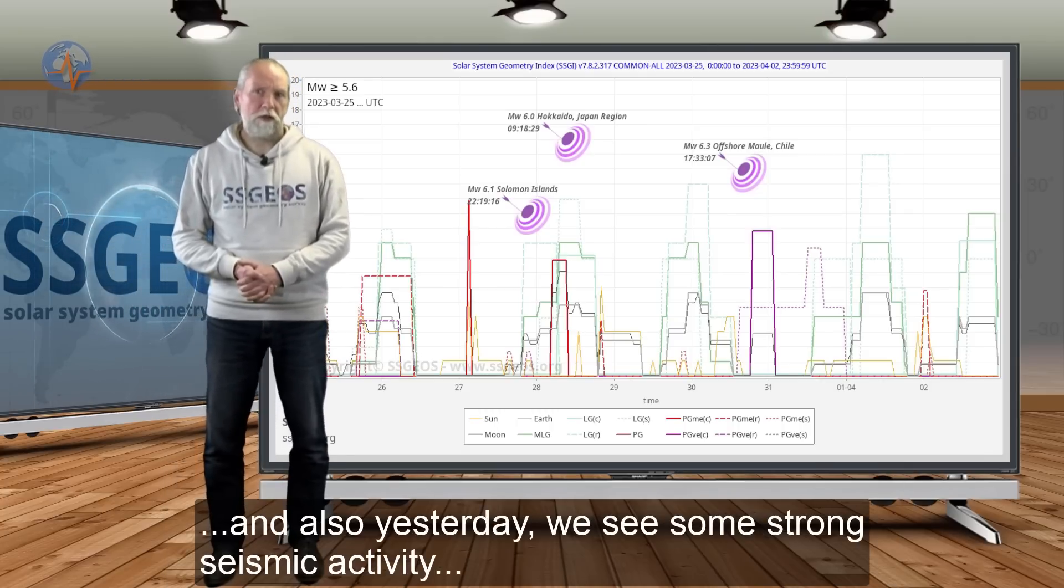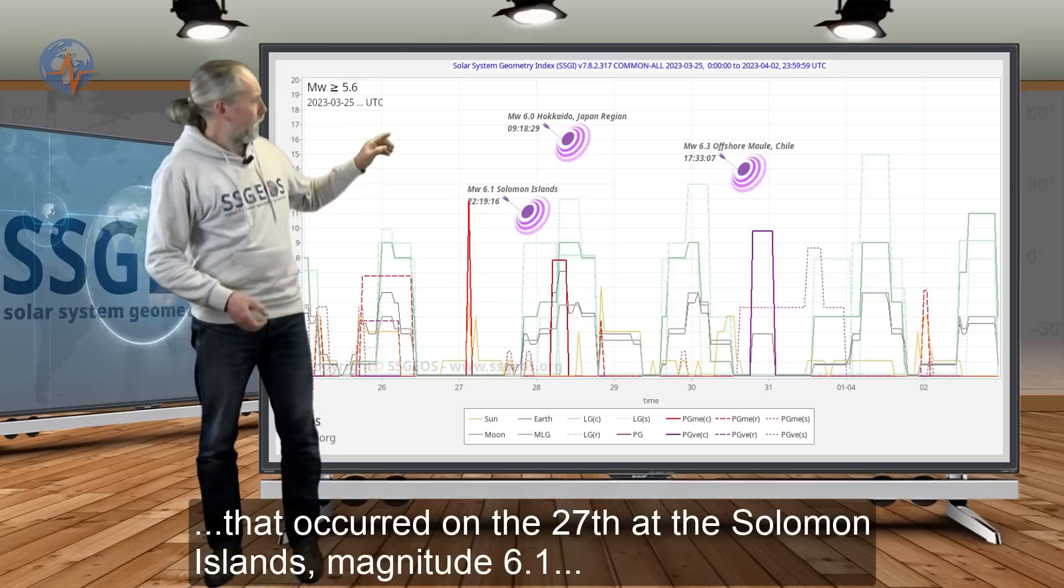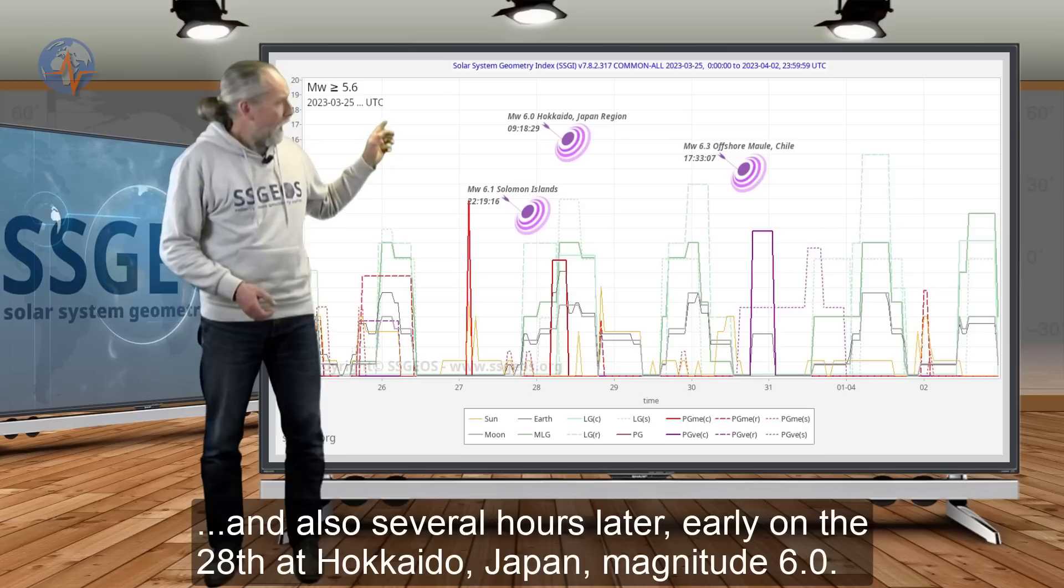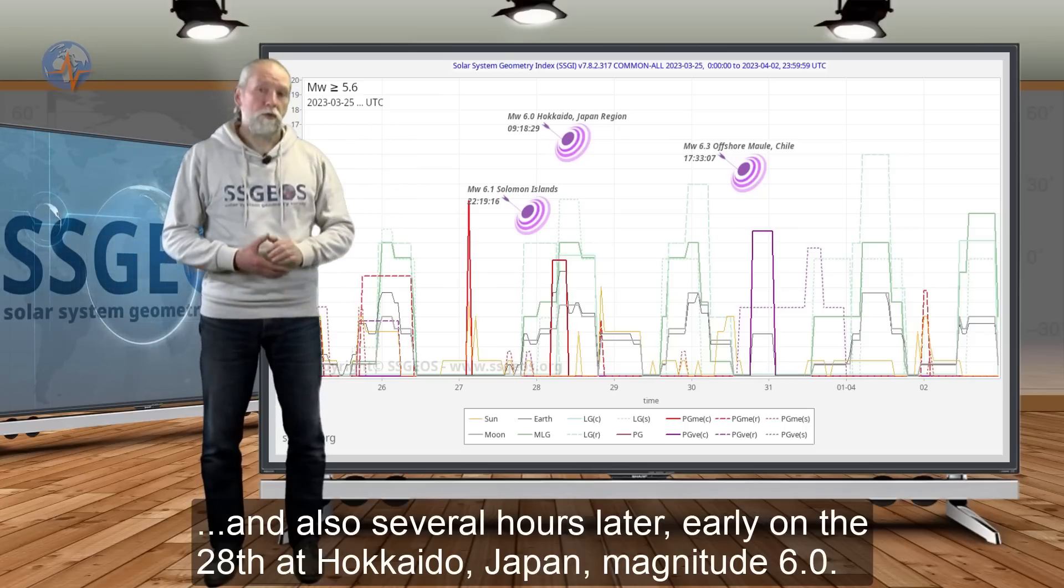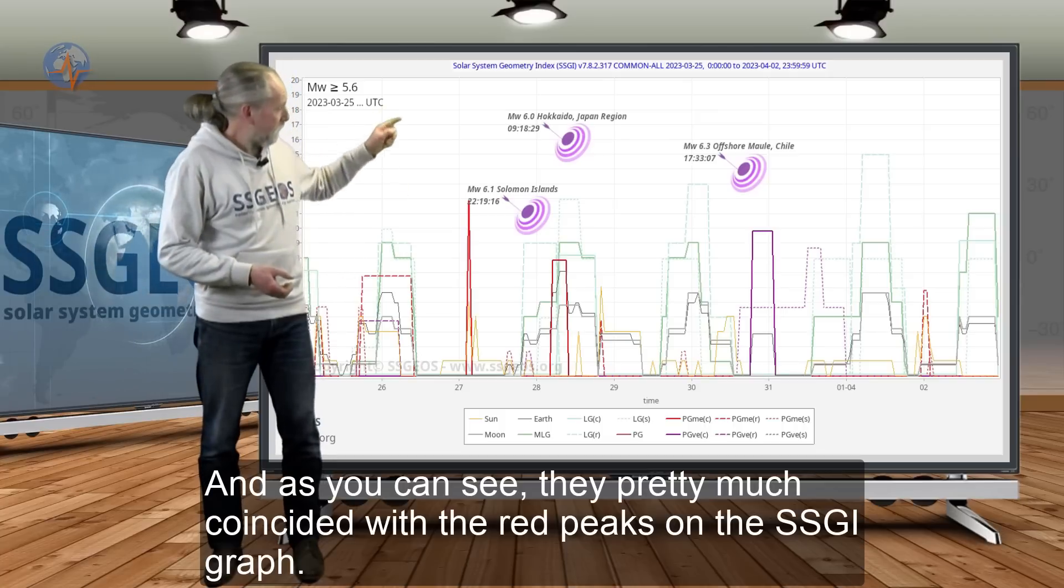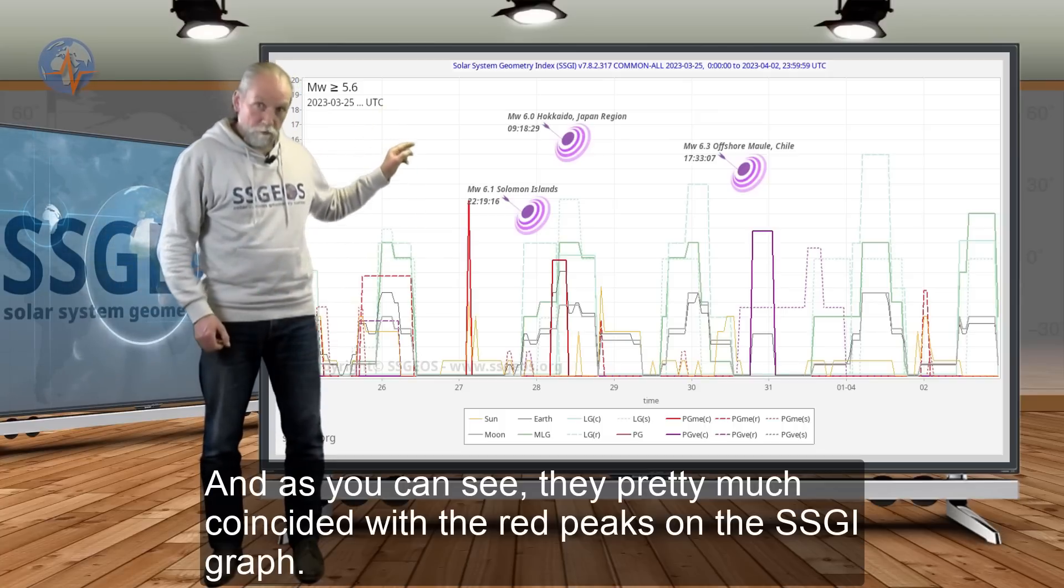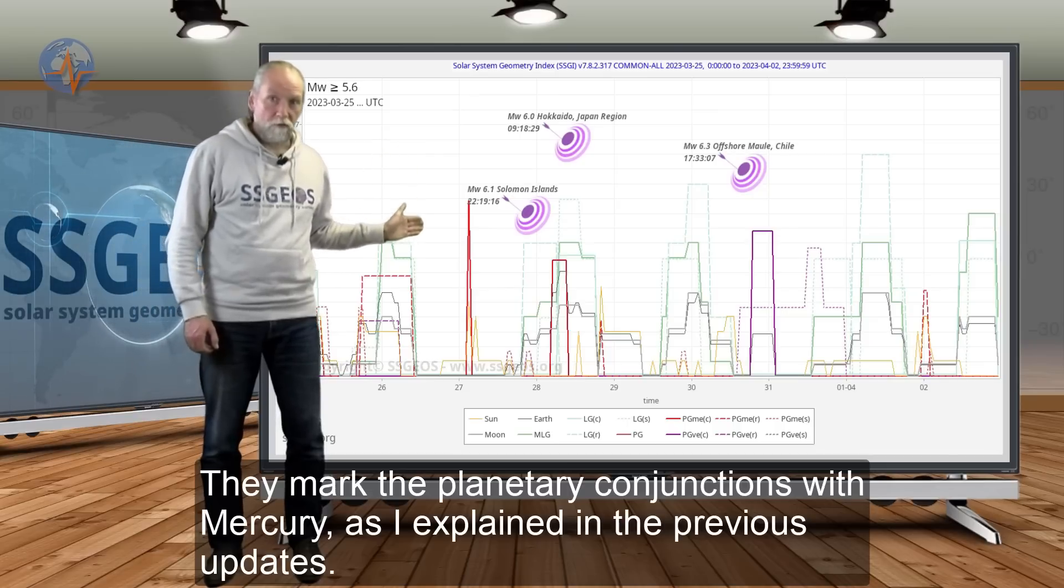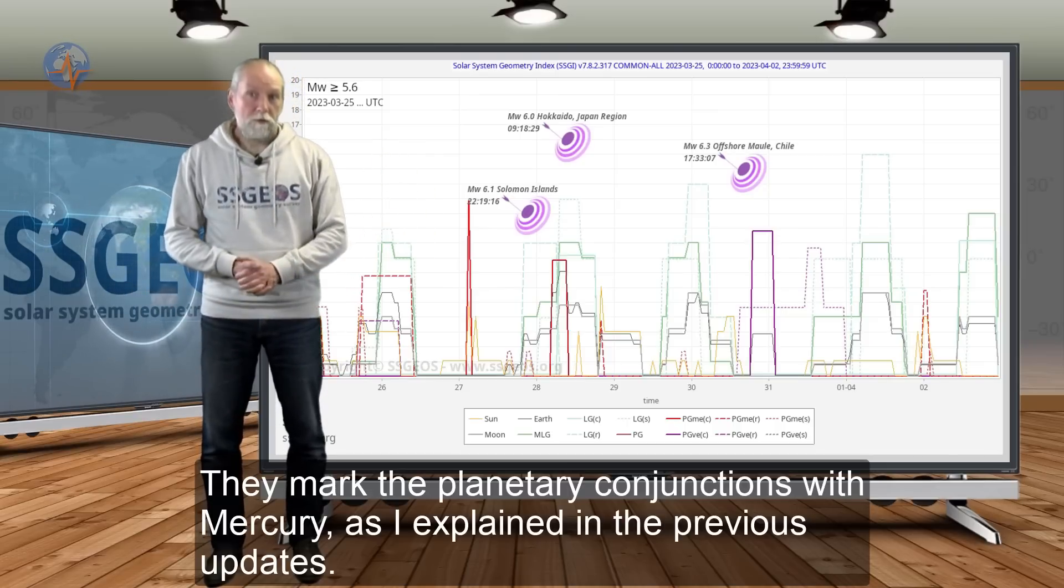We see some strong seismic activity that occurred on the 27th at the Solomon Islands magnitude 6.1, and also several hours later early on the 28th at Hokkaido Japan magnitude 6. As you can see, they pretty much coincided with the red peaks on the SSGI graph, which marks the planetary conjunctions with Mercury as I explained in the last two updates.